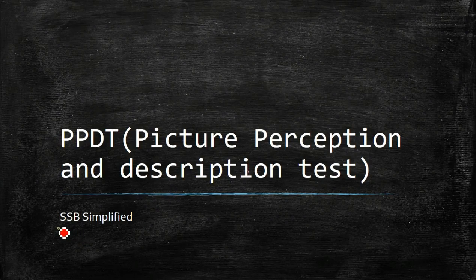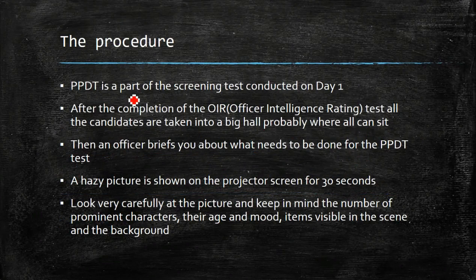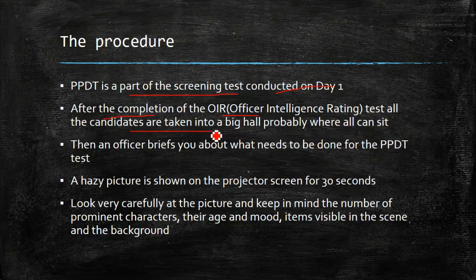Hello everyone, welcome back to the series of SSB Simplified. Today we are going to talk about PPDT — that is Picture Perception and Description Test. This test is a part of the screening test conducted on day one. After the completion of OIR (Officer Intelligence Rating test), all the candidates are taken into a big hall where all can sit, and the officer present there briefs you about what needs to be done for the PPDT test.